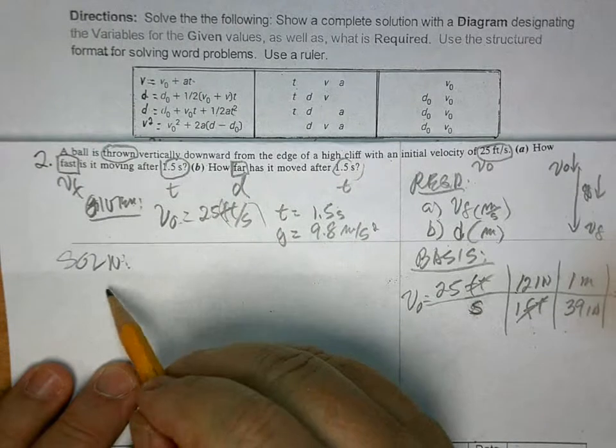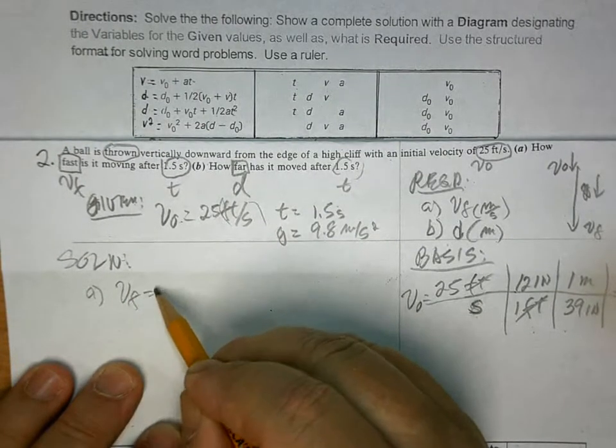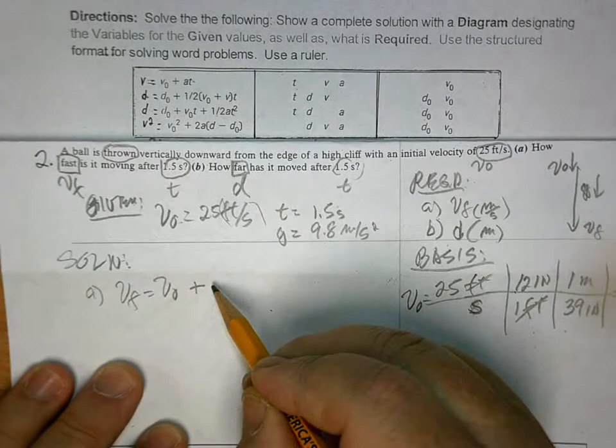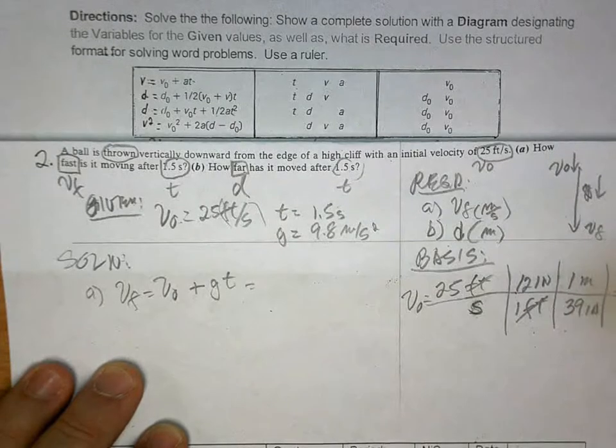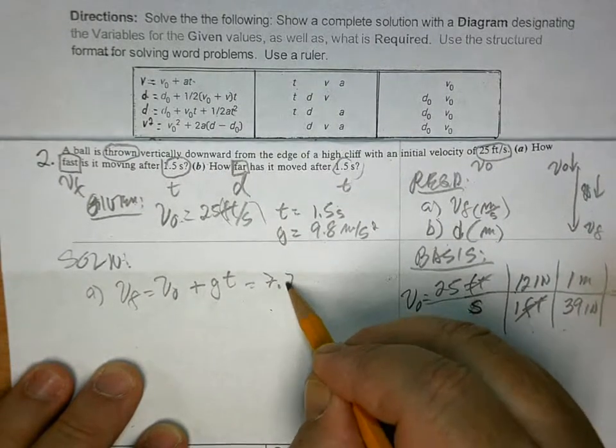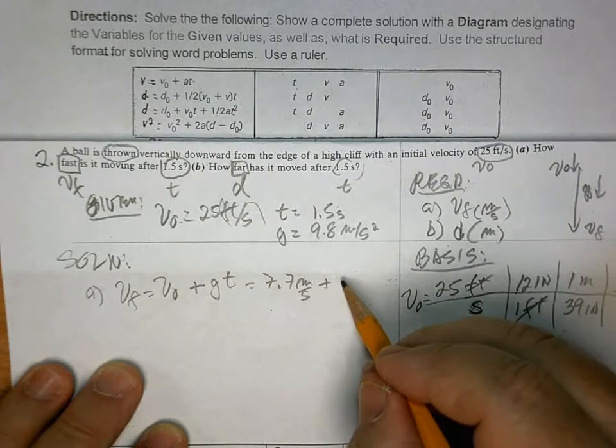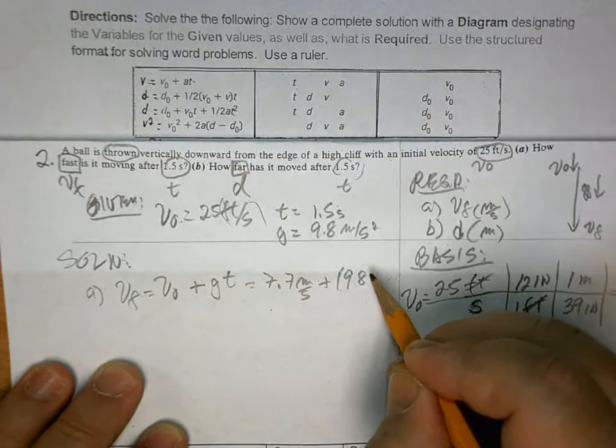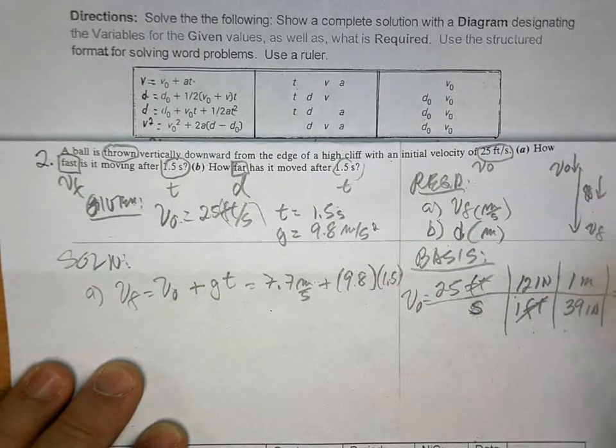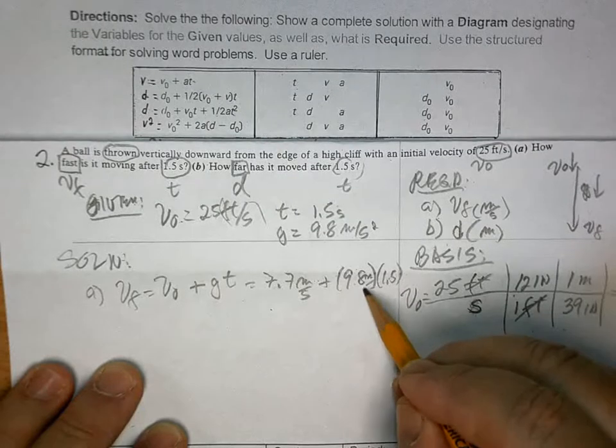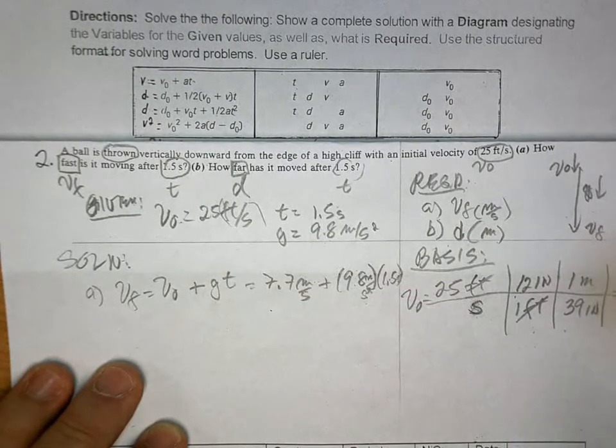And so, what's your solution going to be? You just use the first one. So, it's VF is equal to V0 plus GT. And they're the same sign. So, what is our V0? You have to use meters per second.